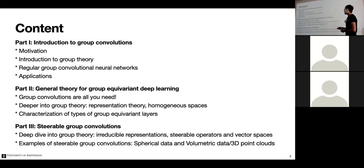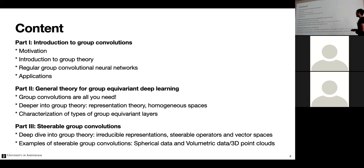Part three covers steerable group convolutions, which relates to physics. Some of you may be familiar with spherical harmonic functions and representation theory — these can be applied to build neural architectures. It's an even deeper dive into group theory, but all with very clear implications in computer science.